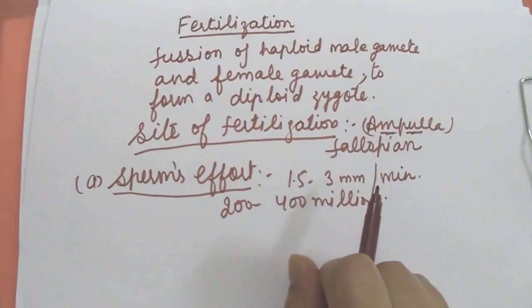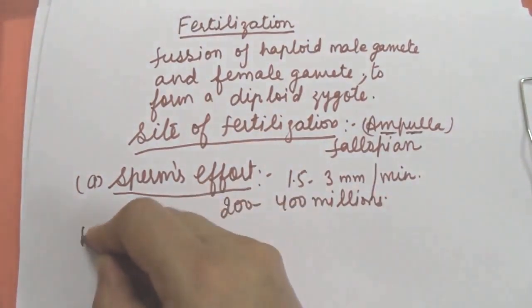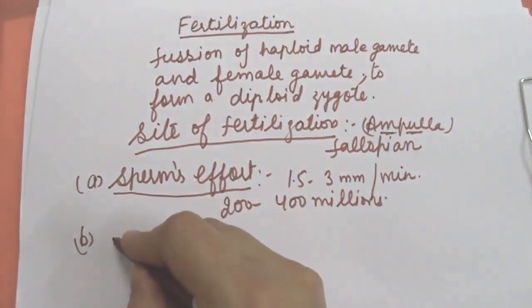A single ejaculate of semen into the vagina contains about 200 to 400 million sperms. Only 100 sperms reach the fallopian tube. Others degenerate inside the uterus.